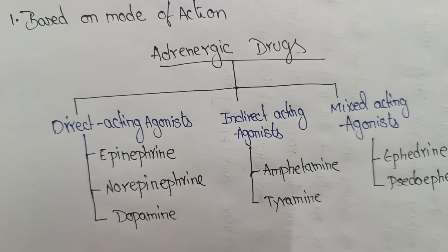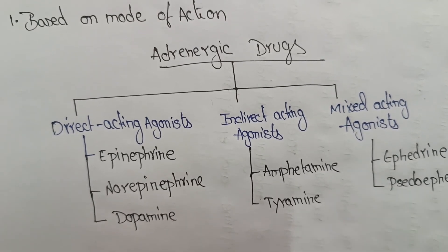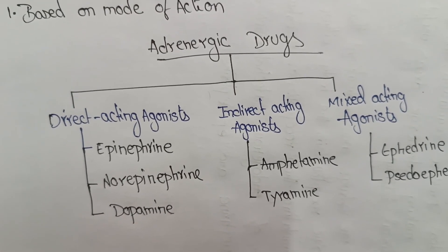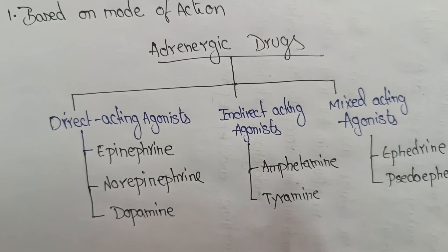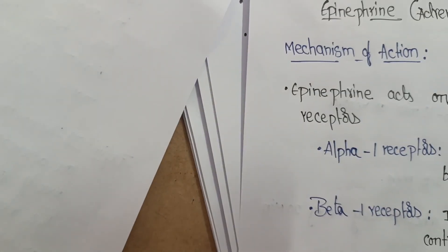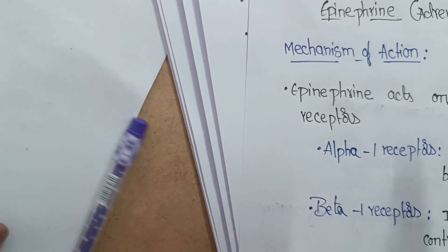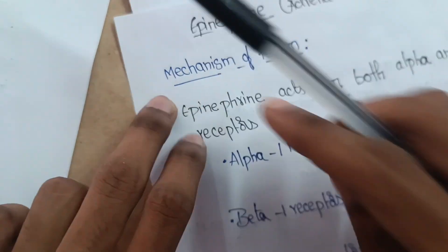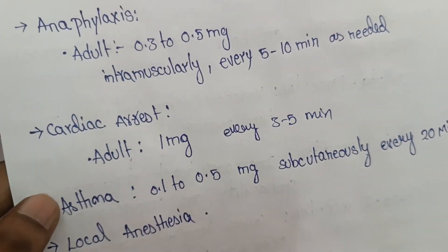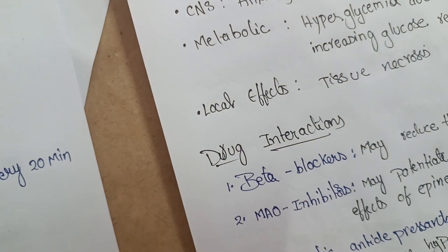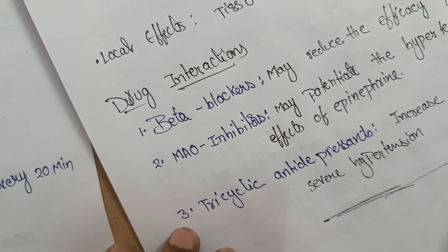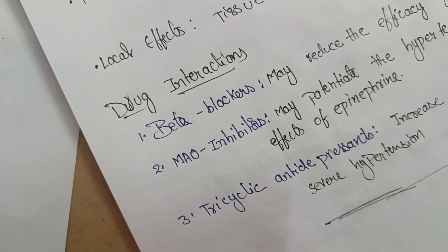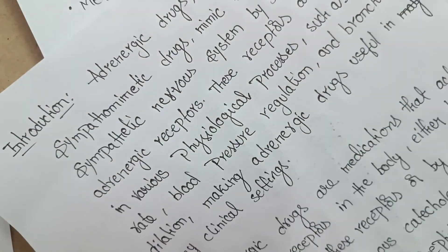Taking the same example — adrenergic drugs for 5 marks — we need to start from mode of action and then write therapeutic uses, dose and frequency, contraindications, indications, adverse effects, and drug interactions. By covering all of these, we will have enough content to complete the 5-mark answer. At least we need to write up to this for 5 marks.